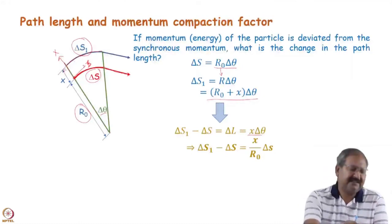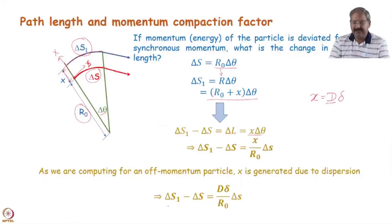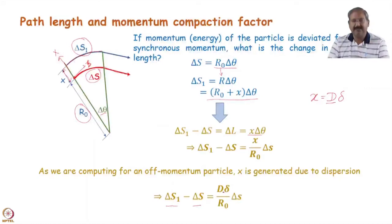This x is decided by the dispersion. So in place of x we can write D * delta, where D is the dispersion at that location. Therefore delta s_1 − delta s, the change in path length compared to the synchronous particle, is (D * delta / r_0) * delta s. So dispersion in the bending magnet comes into the picture when we calculate how much path is changed, and this changed path causes the change in revolution time — dispersion plays an important role in longitudinal dynamics.